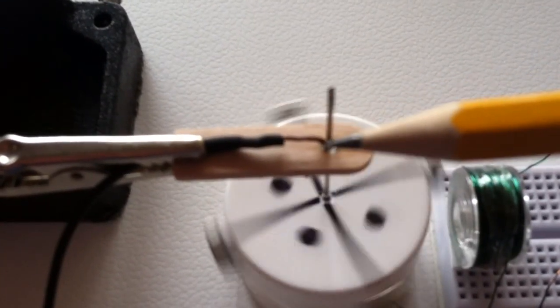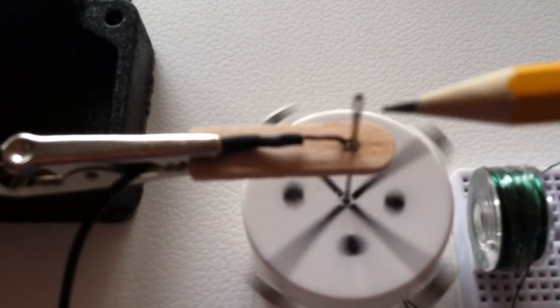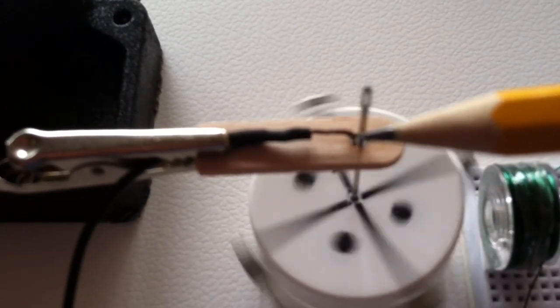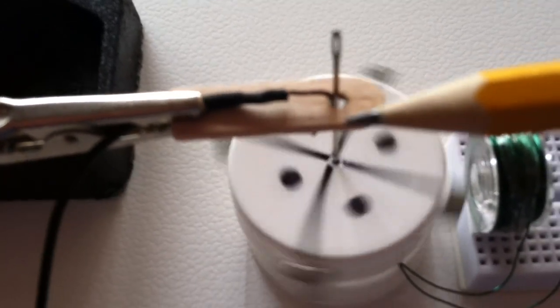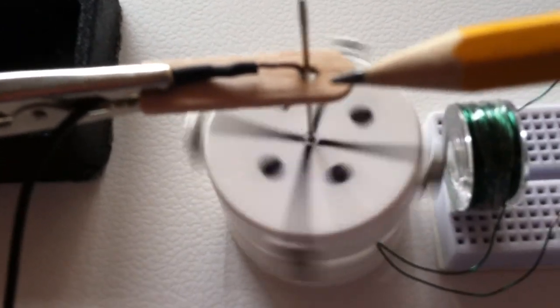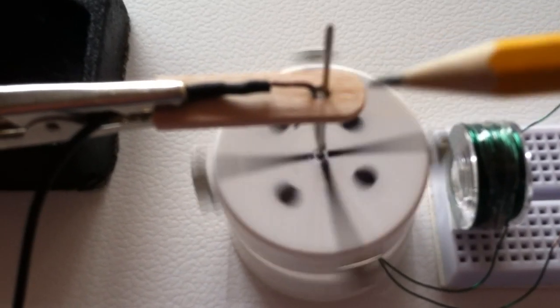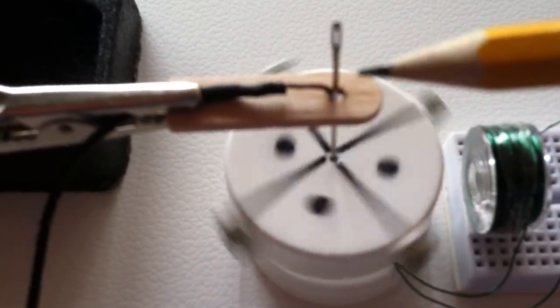The needle rolls around in a hole and hits the wire and makes the make and break contact. You don't have to use a reed switch or electrical circuit or anything. It's just the rolling of that needle in the hole that makes the make and break.